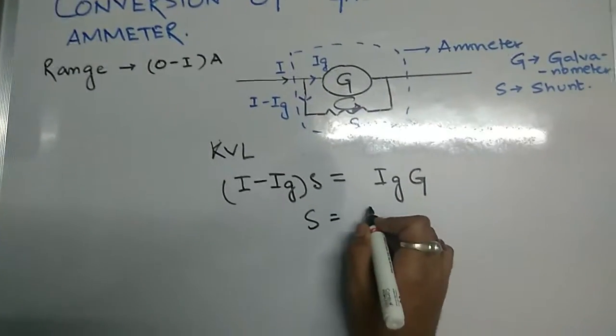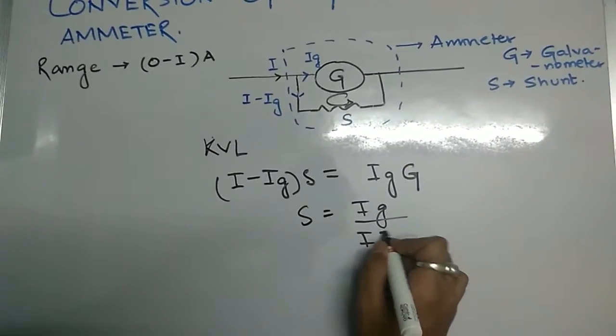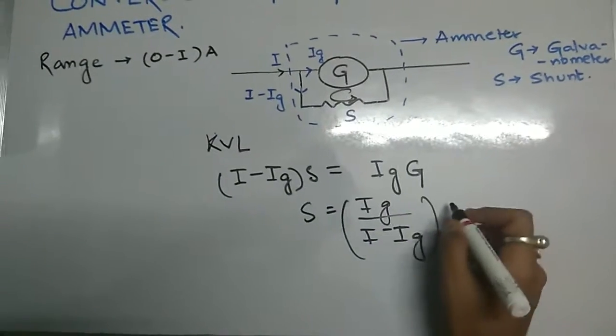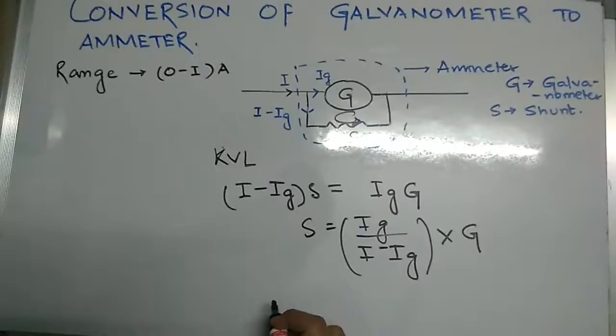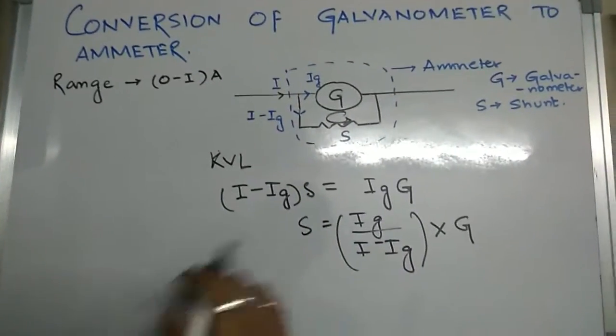Now interchanging, we get S to be Ig divided by I minus Ig, whole multiplied by G. So this is the shunt resistance which we need to obtain.